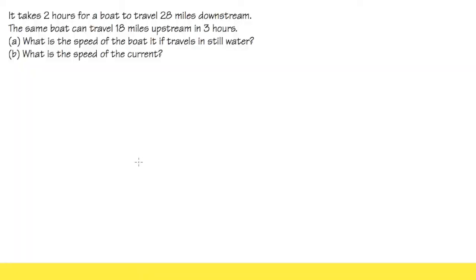Hopefully you tried this question first. It takes two hours for a boat to travel 28 miles downstream — meaning the boat is going down with the water — and the same boat can travel 18 miles upstream in three hours. The question asks us to find the speed of the boat and the speed of the current. The speed of the current means how fast the water is flowing.